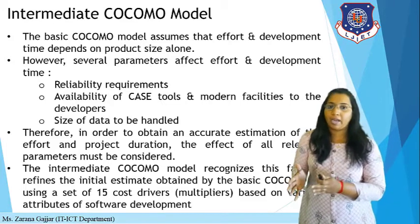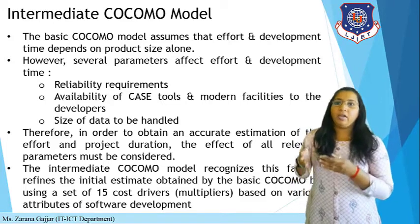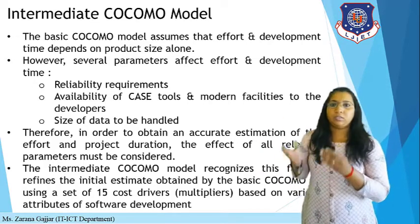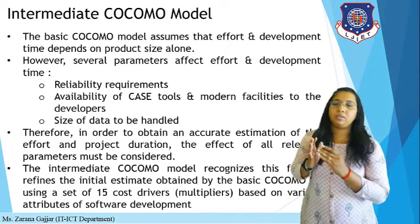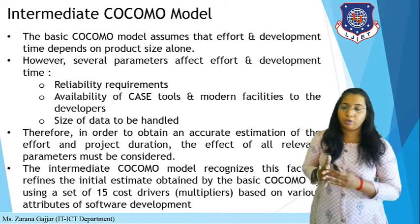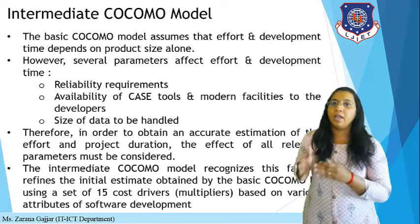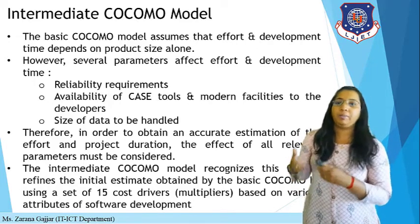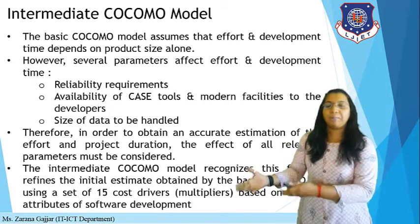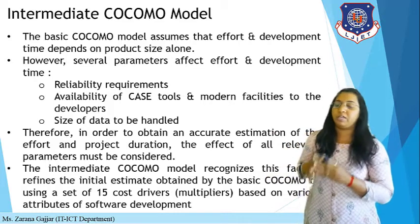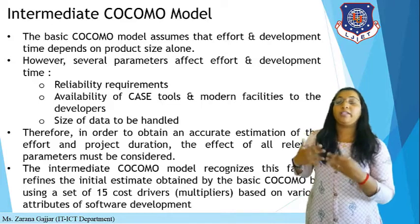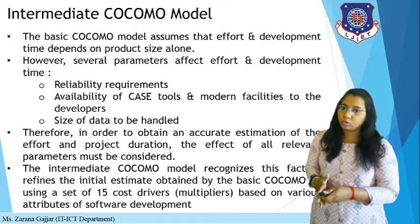The intermediate COCOMO model recognizes this fact and refines the initial estimate. It refines the requirements obtained by basic COCOMO using a set of 15 cost drivers — multipliers based on various attributes of software development. It also uses the basic COCOMO model for cost estimation, but uses 15 different parameters to calculate the actual cost of your software product.